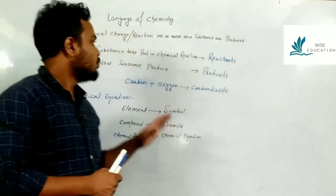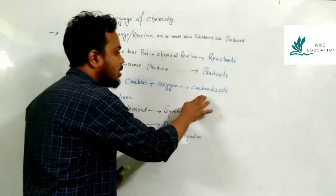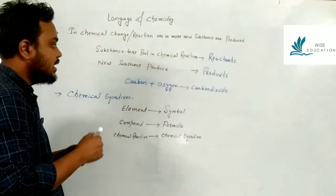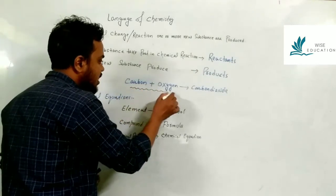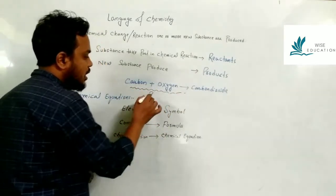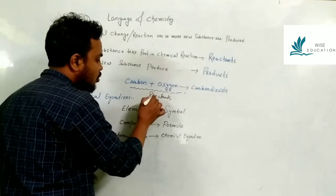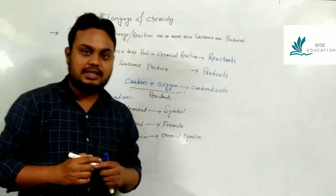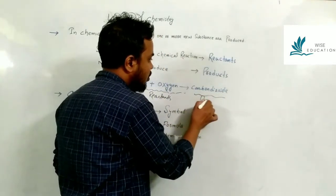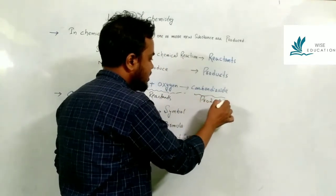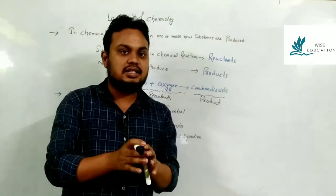In chemical reactions, suppose carbon reacts with oxygen. The substances that take part in chemical reactions are called reactants. Here the reactants are carbon and oxygen. The result produced is carbon dioxide, which we call the product. So in a chemical reaction, the substances on the left side are reactants and on the right side is the product.